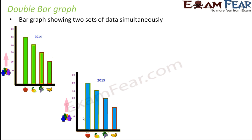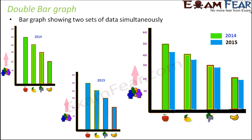So you are basically conducting the same survey — the same set of data — for two different years. Now if you want to compare these two sets of data, can they be put together in one graph? Right now you see two different graphs: one for 2014 and another for 2015. Yes, you can combine them, and that is when you draw a double bar graph.